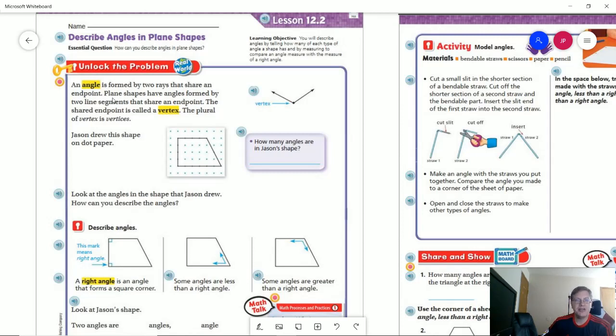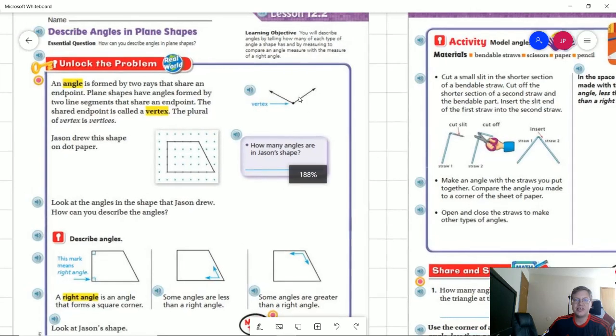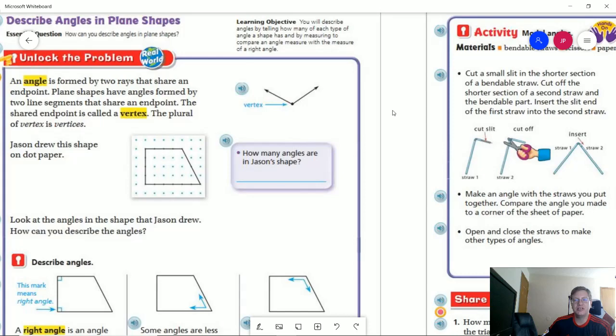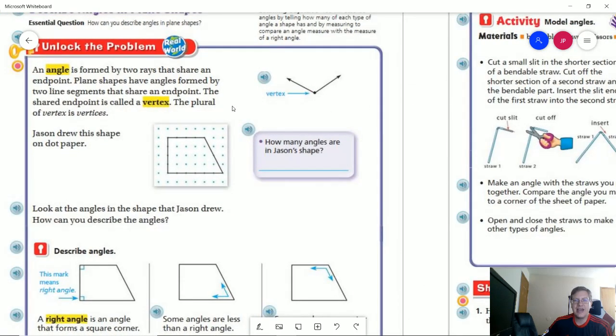We're working with an angle that is formed by two rays and we'll expand that a little bit further next year as far as what can make an angle. But our angle is going to be formed by a shared endpoint which we are going to call a vertex, and that's a singular version of the word. If we're talking about more than one we would use the word vertices.